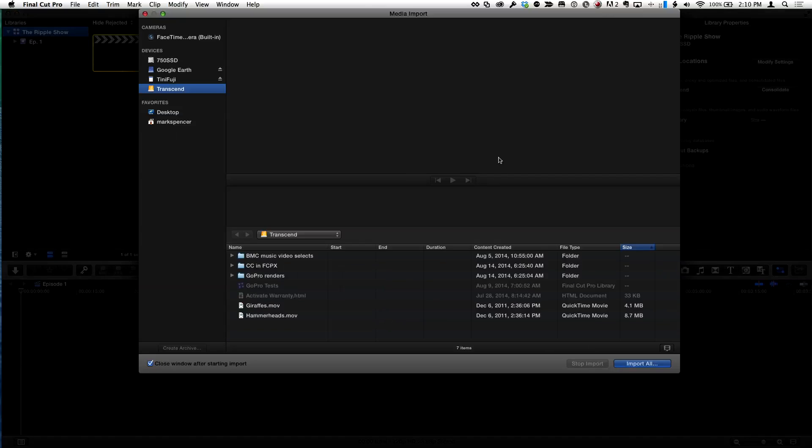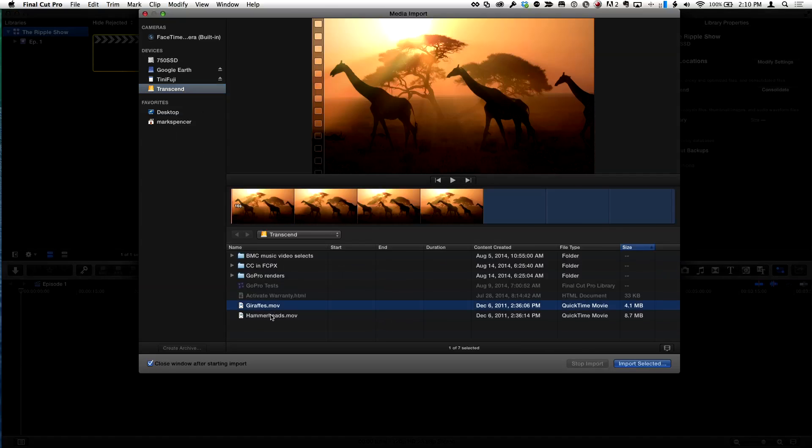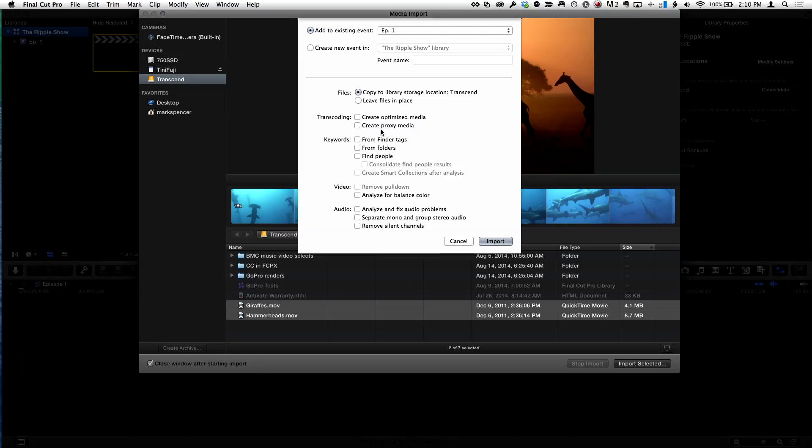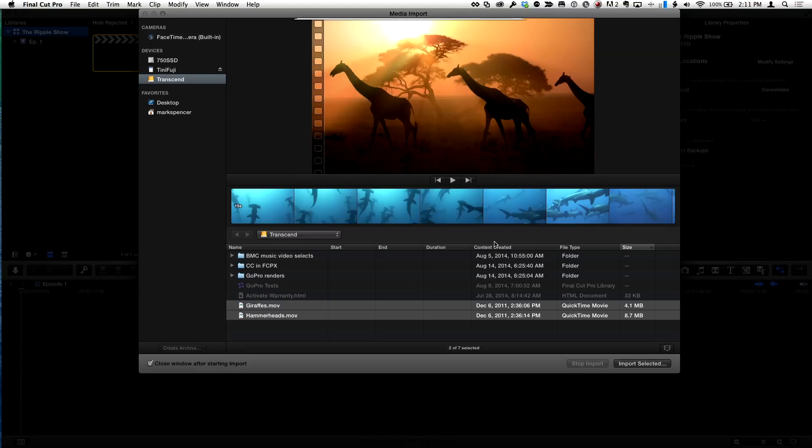I'll hit command I to import and select a couple clips. I'll choose import selected. Here's the key part to setting this up: I'm going to copy those to this drive. If I needed optimized media I could check that, but in this case I don't. The key is I am not going to choose to create proxy media right now, because if I did it would put that proxy media on that external location.